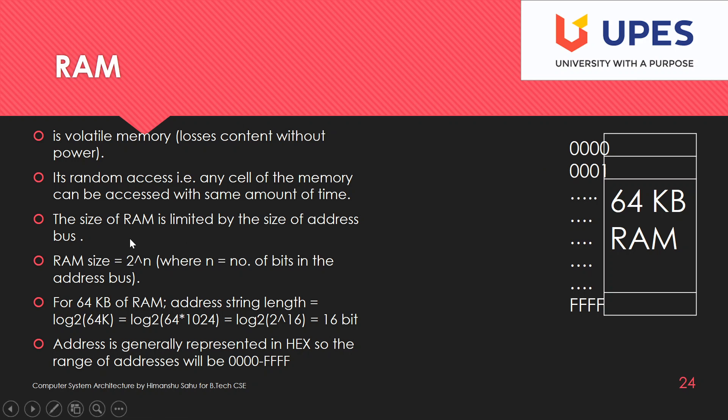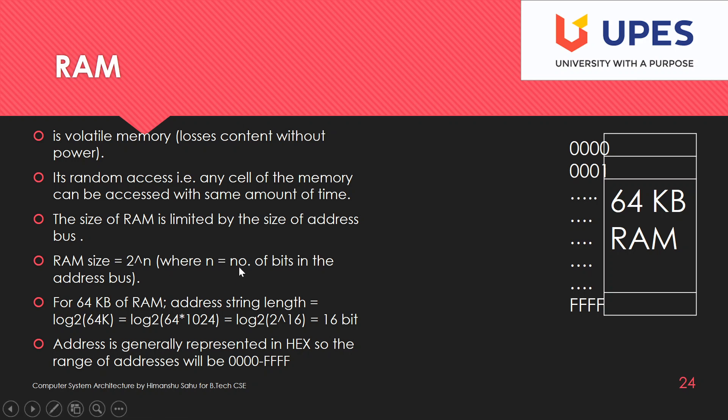The RAM size is limited by the size of the address bus. RAM size equals 2 raised to the power n, where n is the number of bits of the address bus. For an address bus size of 32 bits, that means 2³² equals 4 GB.